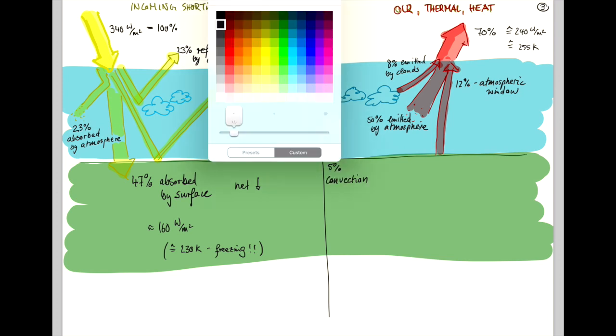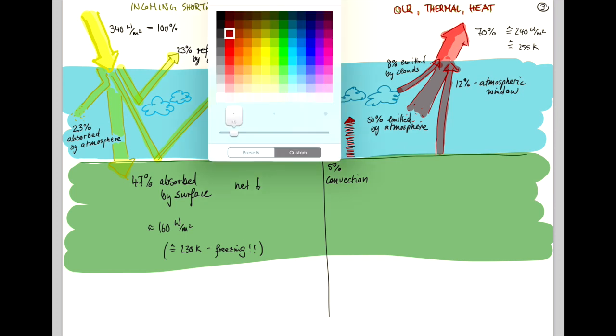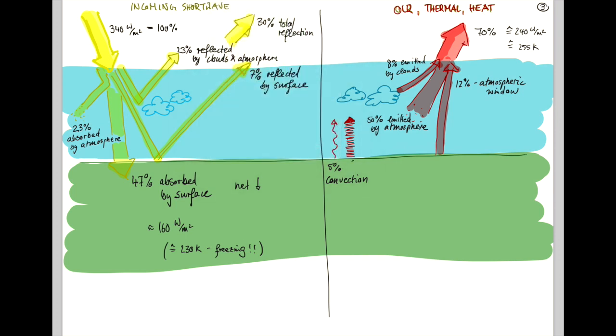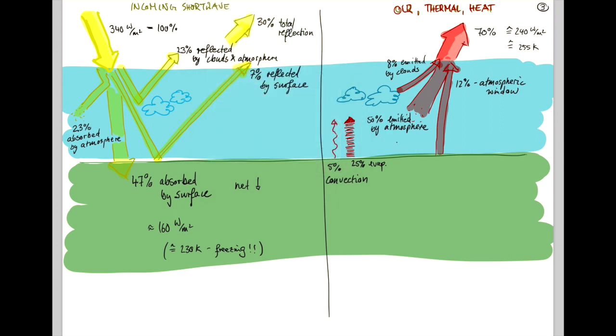Then there is evaporation into the atmosphere from the surface, mostly from the oceans, which provides 25%. And then there is the actual surface radiation, which is quite a lot.